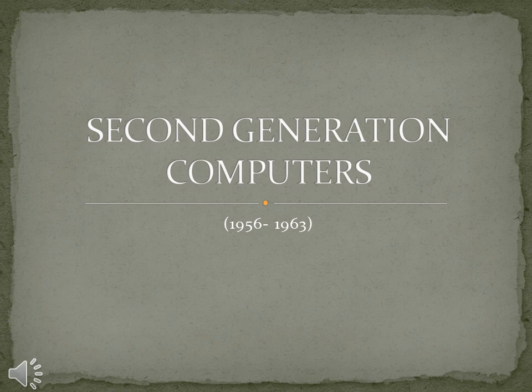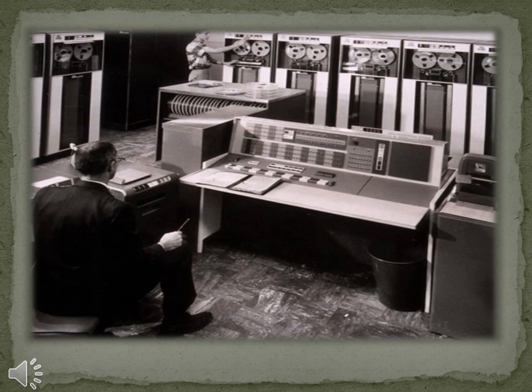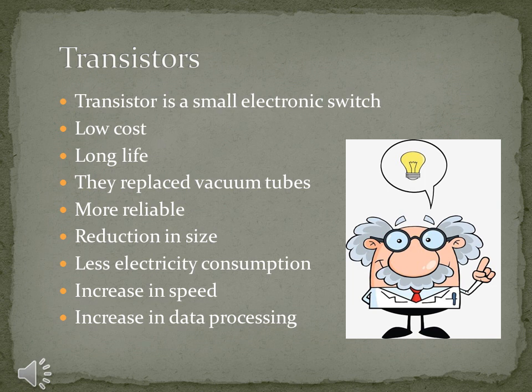We are going to discuss the second generation computers. Their period of time was from 1956 till 1963. The image in front of you is actually one of the computers from the second generation. This is a second generation transistor computer, as the technology used in it was transistors. It was developed in 1950 and was sold for around 2.9 million dollars.